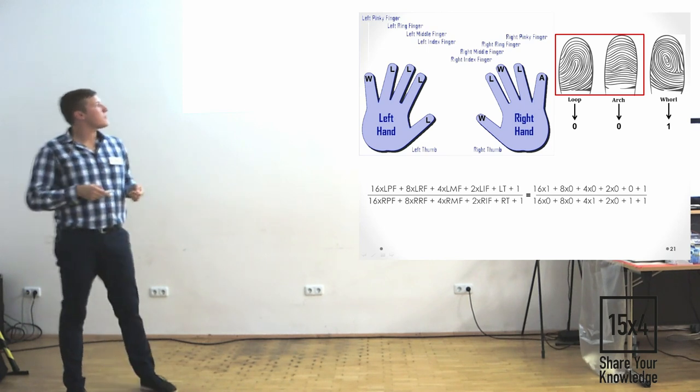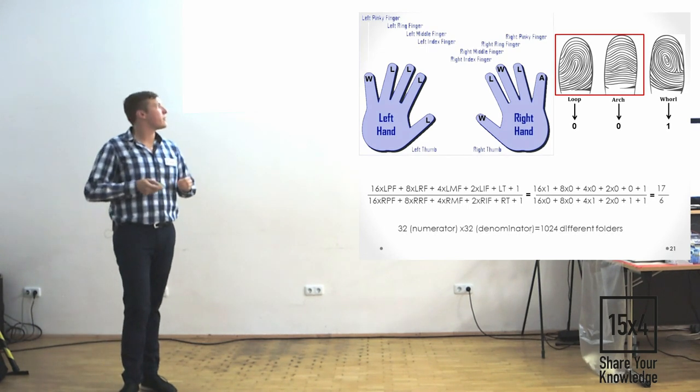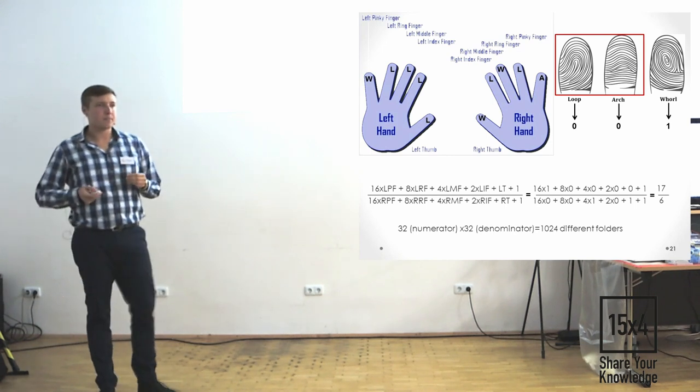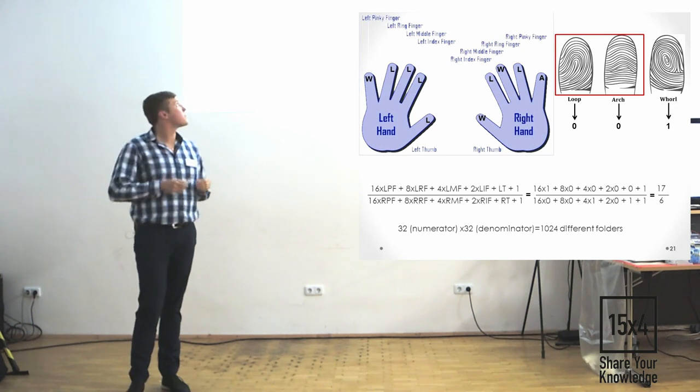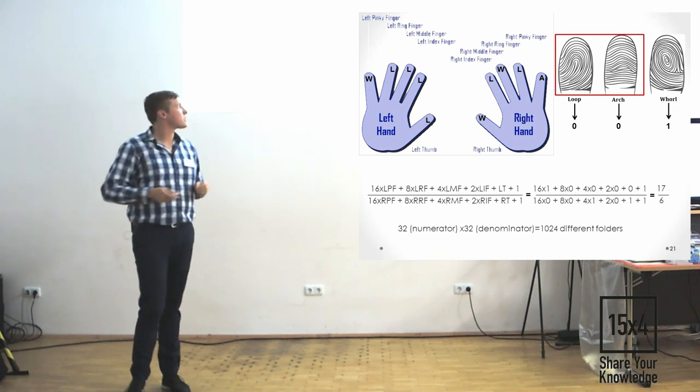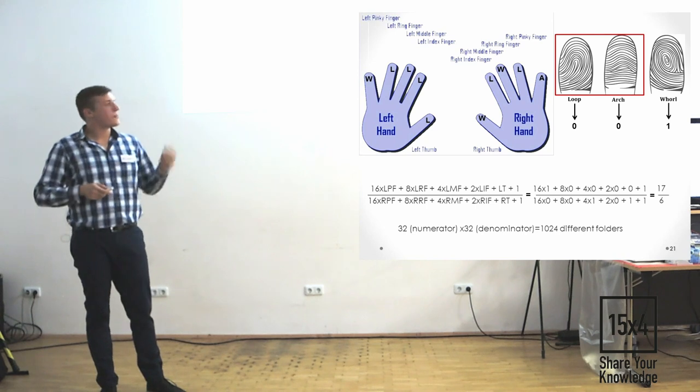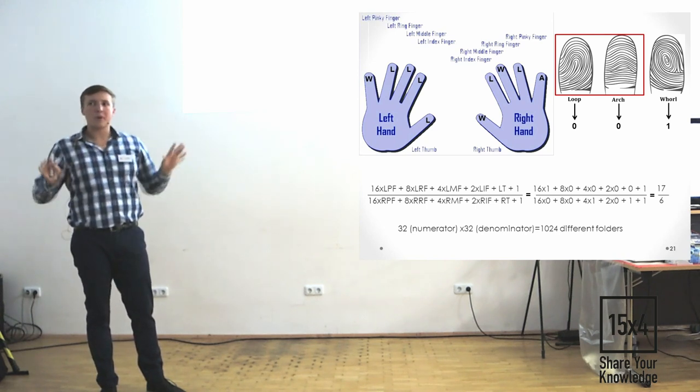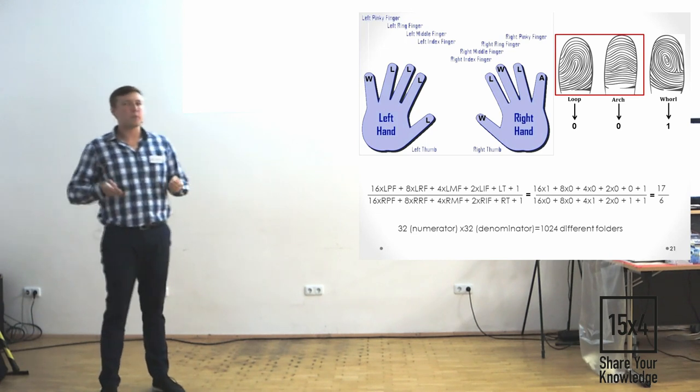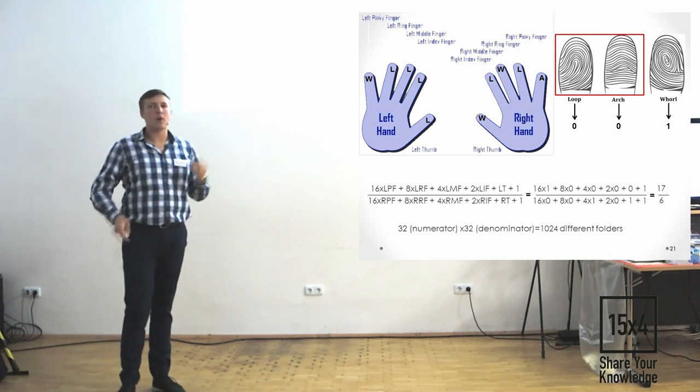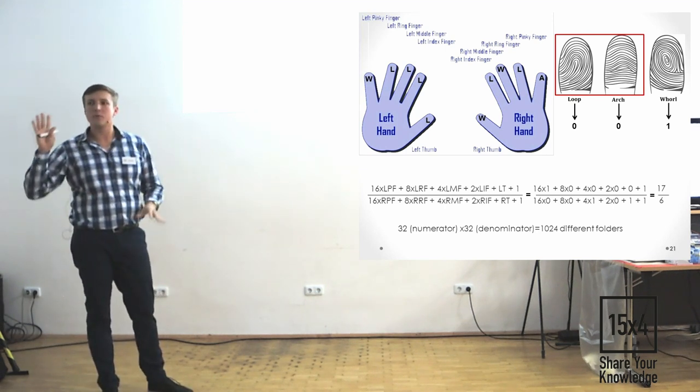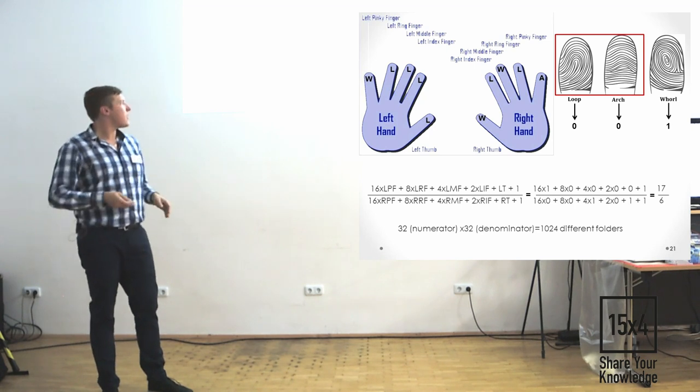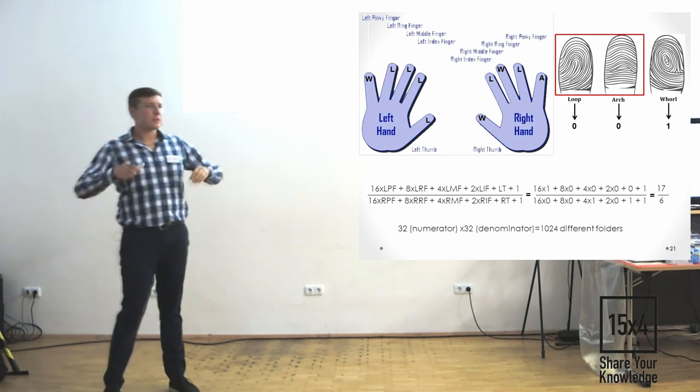And in the end, we have the folder with the name 70 over 6. We just put this criminal with these fingerprints in the folder, which names 70 over 6. The maximum, what could be, is 32 in the numerator. It means all fingerprints are whorls. And the minimum could be one. It means all the whorls or arcs, loops. We have 32 different options for left hand, 32 for right hand. And we have 1024 different folders. It was the way how it was systematized at that moment.